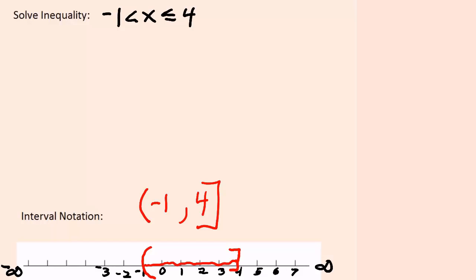And then the interval notation looks just like the graph with a parenthesis on the left, a negative 1, a comma, a 4 and a bracket on the right.